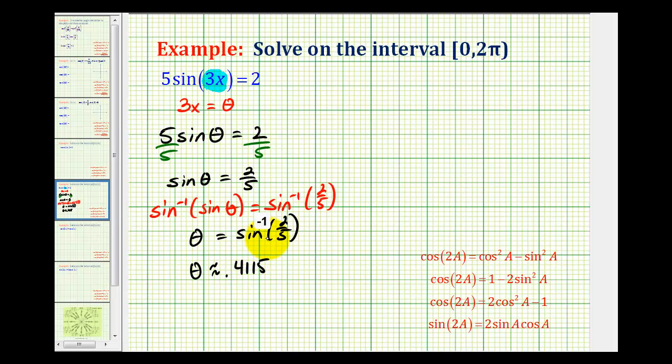But remember, sin(θ) is positive in both the first and second quadrants, and the calculator only gave us the first quadrant solution. So let's model this angle. This angle here is approximately 0.4115 radians.